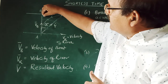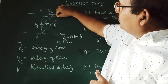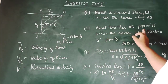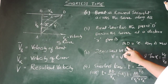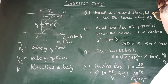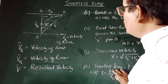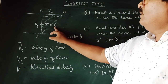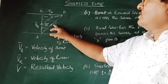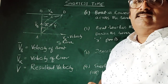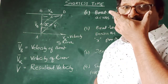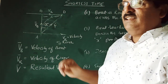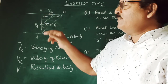The boat reaches point D, down the river at a distance X. So VD equals X. The resultant velocity is given by Pythagoras: AD squared equals AB squared plus BD squared, therefore V squared equals VB squared plus VR squared.